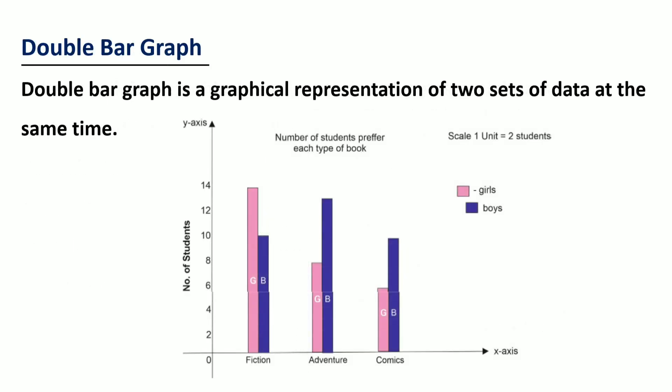The next is double bar graph. What is double bar graph? Double bar graph is a graphical representation of two sets of data at the same time. Double bar graph helps us to compare two sets of data simultaneously.